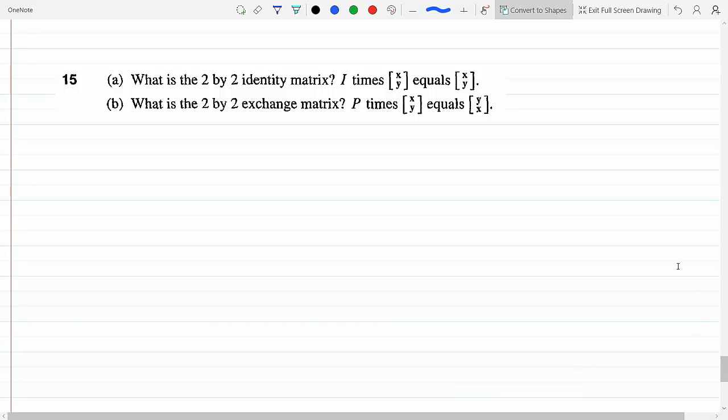A 2 by 2 identity matrix is a matrix where you multiply it by a matrix and it gets you the same result back. So for part a, the 2 by 2 identity matrix is 1...